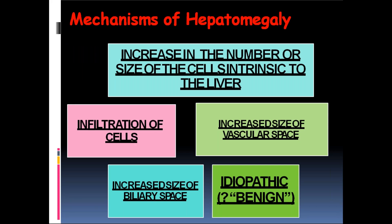What are the mechanisms of hepatomegaly? First, increase in the number or size of cells intrinsic to the liver — liver cells — or infiltration of cells from outside. Second, increase in size of vascular space and vessels. Third, increase in the size of biliary space — biliary radicals will be increased in size. And fourth, idiopathic or benign causes, unknown mechanism.